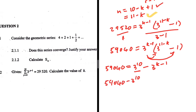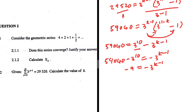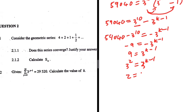Taking 3 to the power 10 to the left-hand side: 59040 minus 3 to the power 10 equals minus 3 to the power k minus 1. Computing 59040 minus 3 to the power 10 gives minus 9. So minus 9 equals minus 3 to the power k minus 1. Dividing both sides by minus 1: 9 equals 3 to the power k minus 1. Writing 9 as 3 squared gives 3 to the power 2 equals 3 to the power k minus 1, so 2 equals k minus 1, therefore k equals 3.